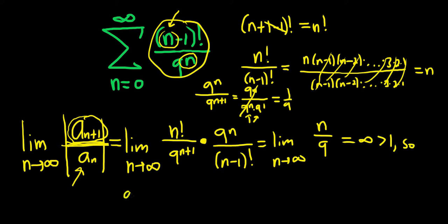And this limit equals infinity, which is bigger than 1. So that means it diverges by the ratio test. Recall the ratio test says if it's less than 1 you get convergence, if it's bigger than 1 you get divergence, if it equals 1 no info.